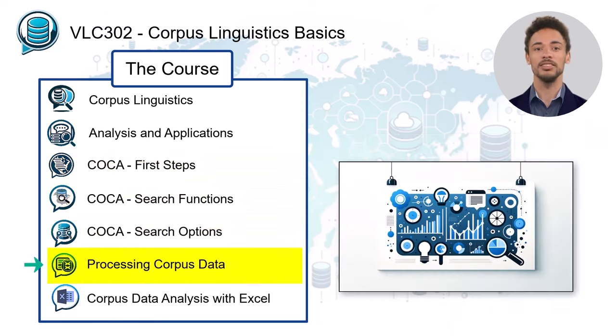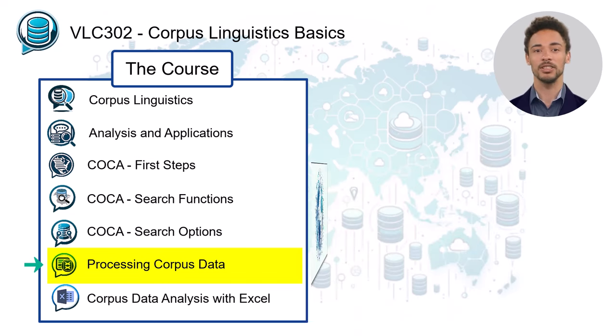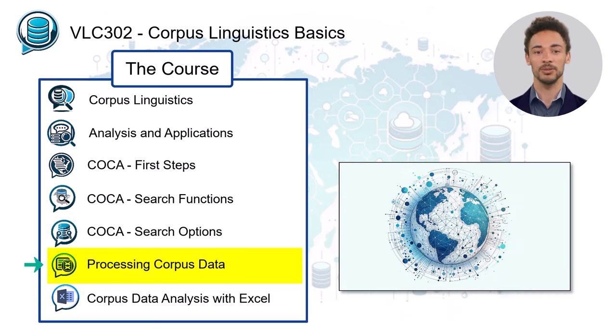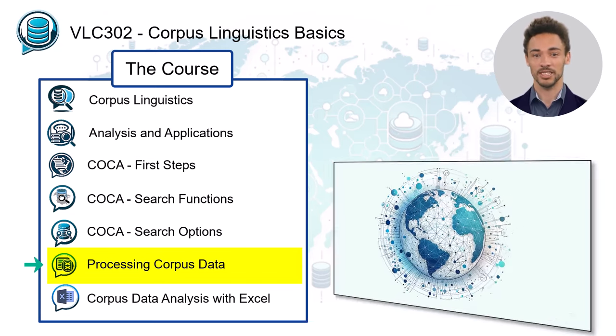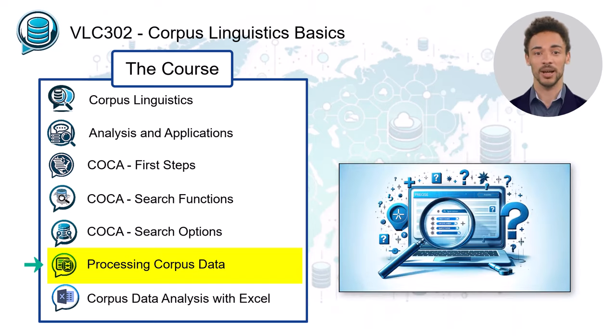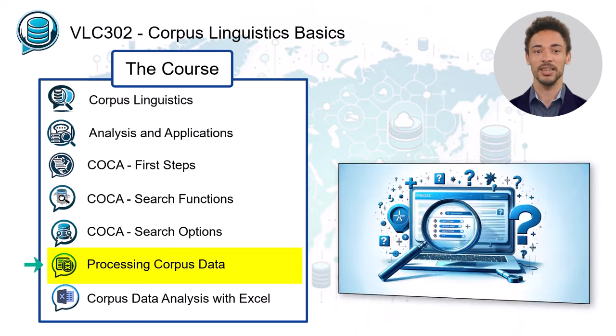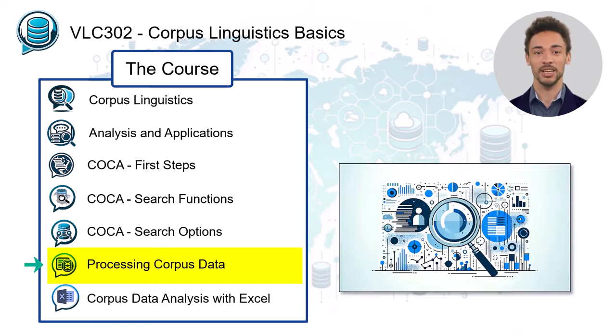Unit 6 expands these skills. It not only shows how to switch between corpora, but it also discusses why and when it might be important to randomize the query results and how to spot-check them.